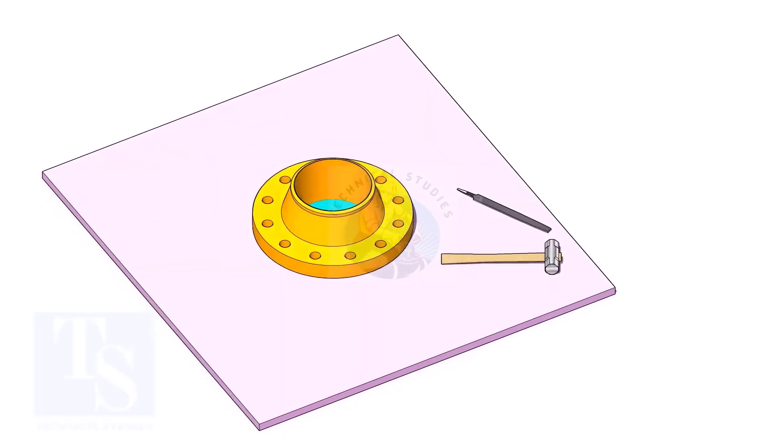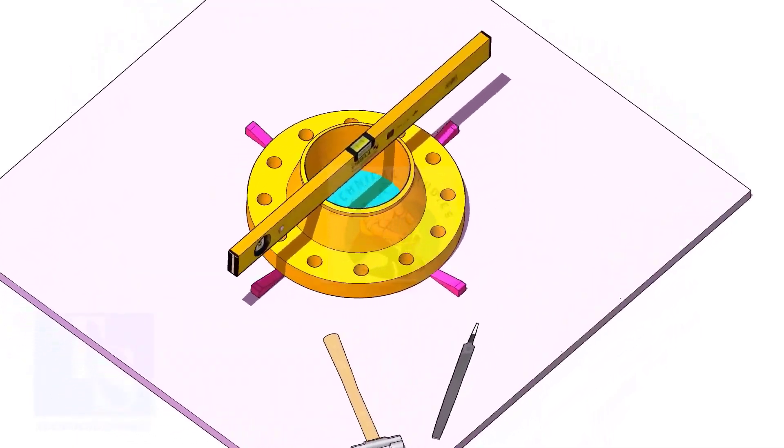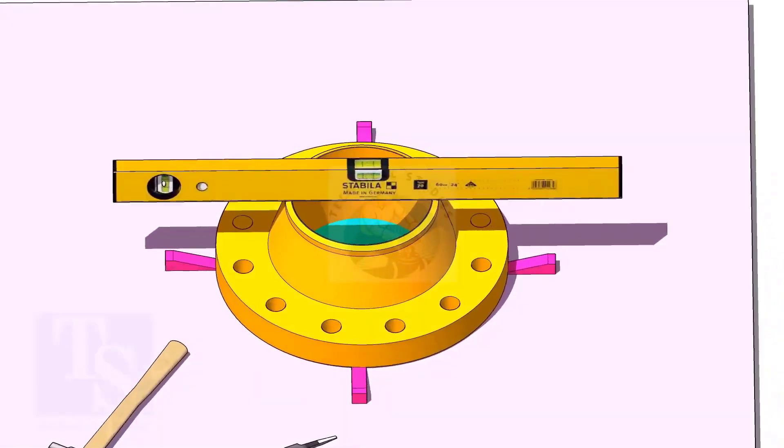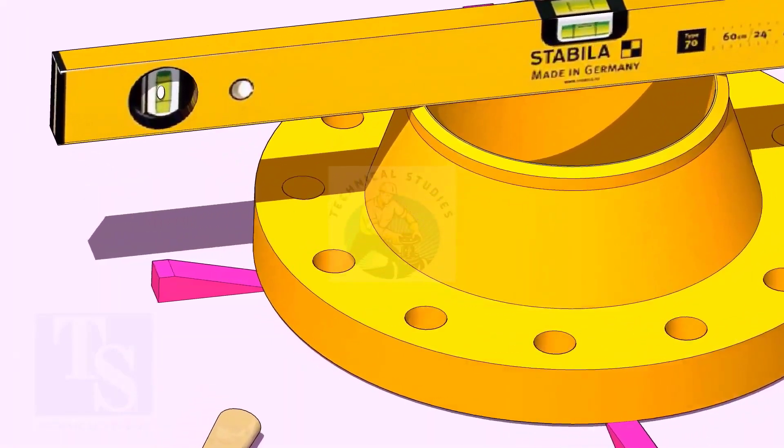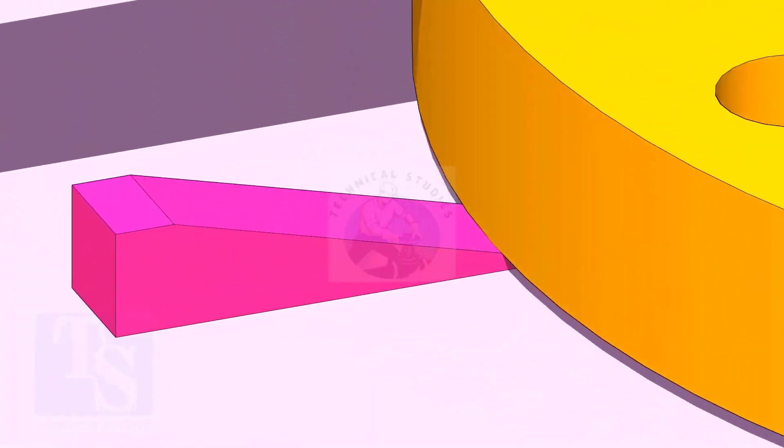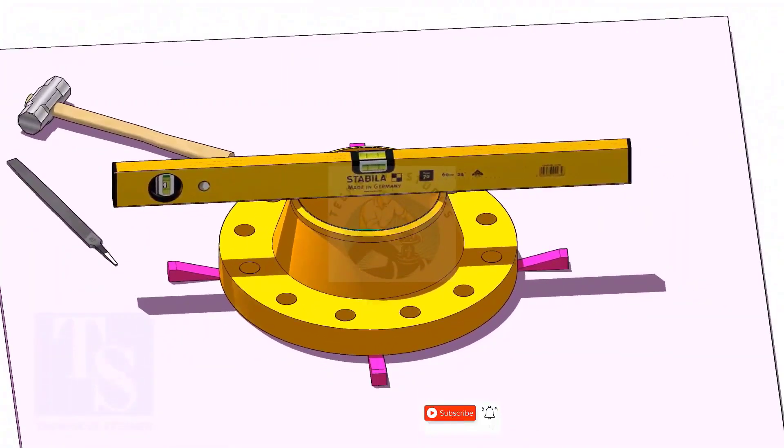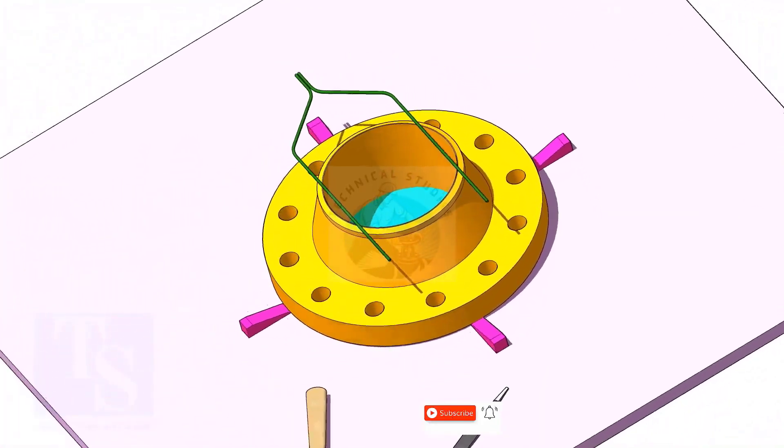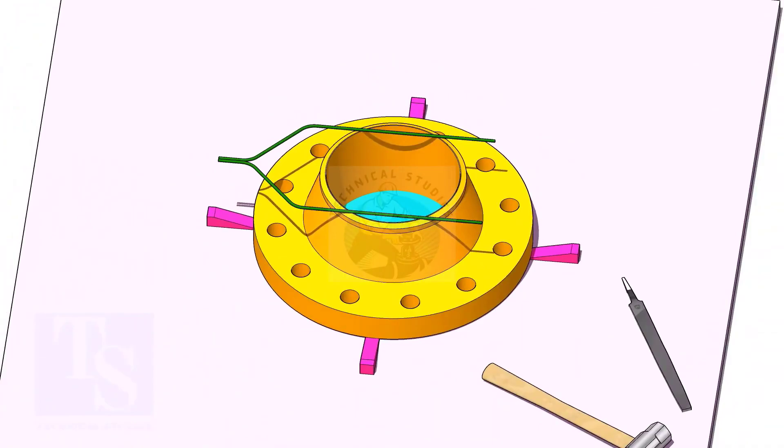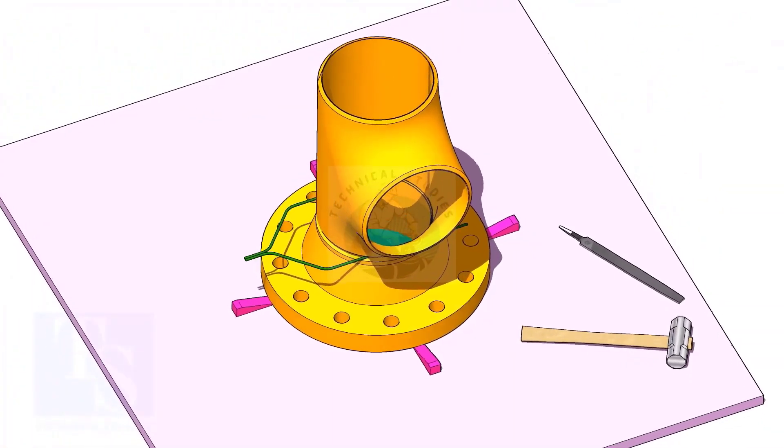Use small wedges to level the flange. Put the tee on the flange.